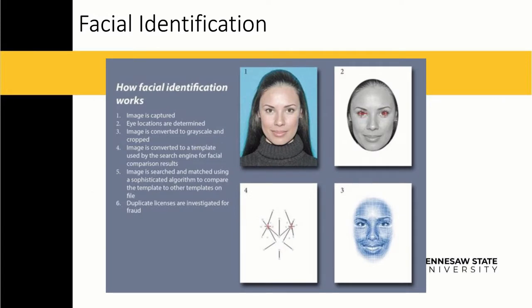For facial identification, they usually take a still image that's already been taken, map the eyes, and then convert it to grayscale and crop the image so that the face is the only part of the image you can see. After that, they map key points of the face like the nose, the ends of the nose, the lips, the chin, and the cheeks. Then they calculate the distance between all of these key features in order to reconstruct a face. After that, they run these distances and features through a database to see if they can match them to an already existing photo.